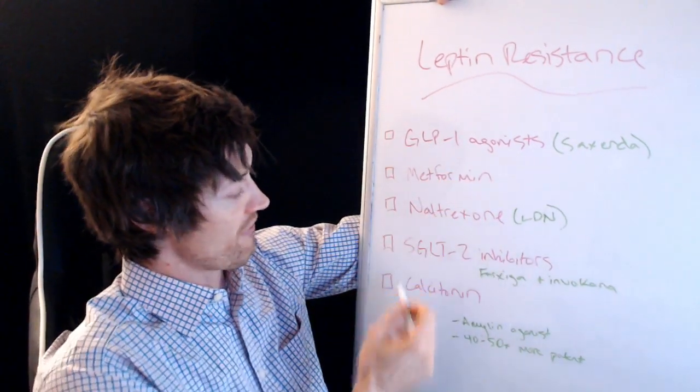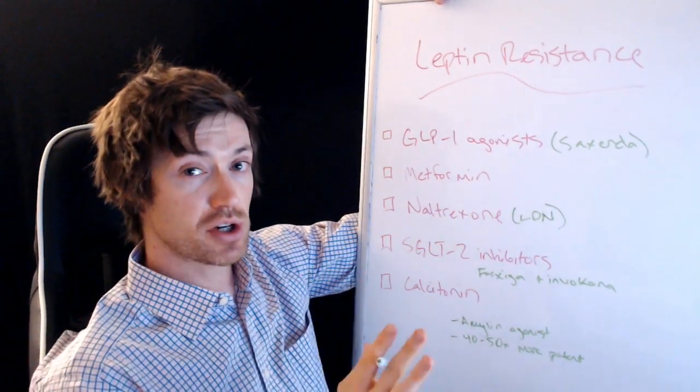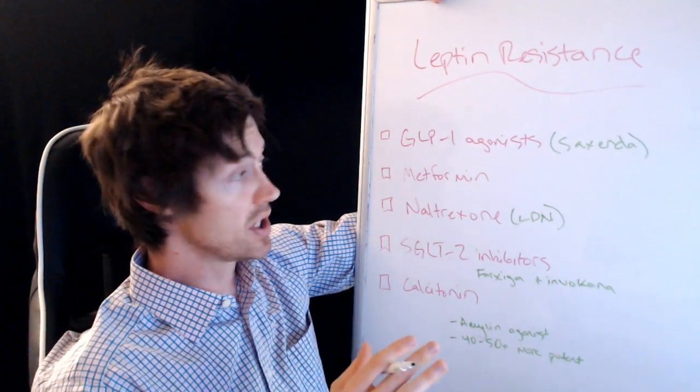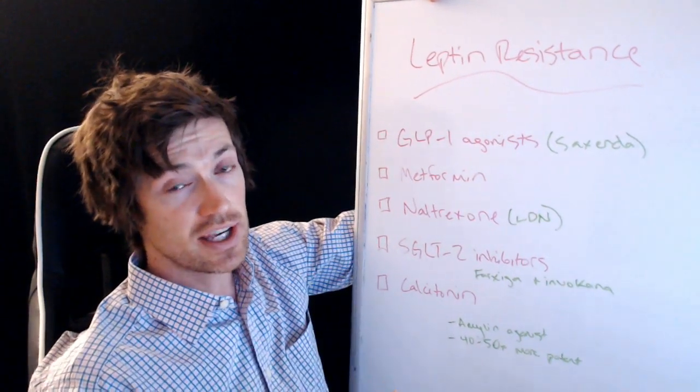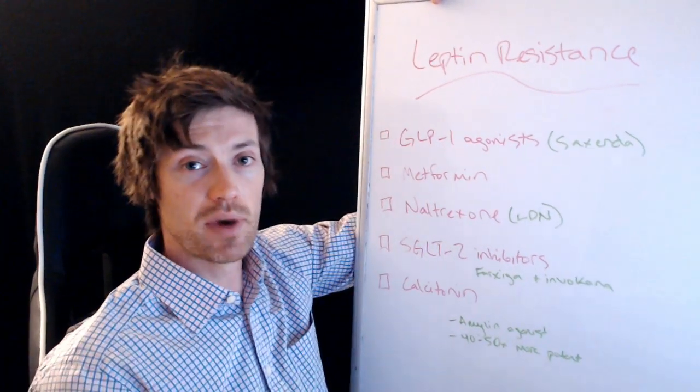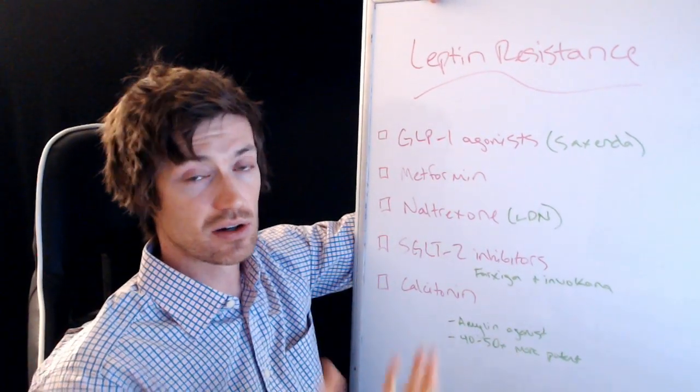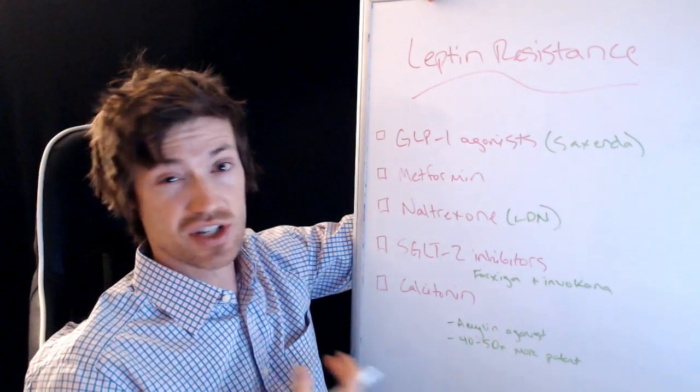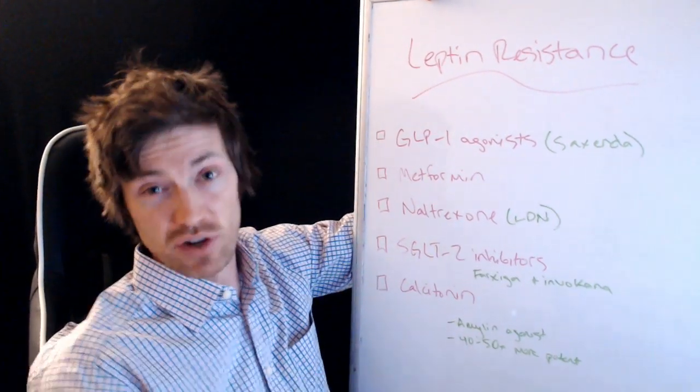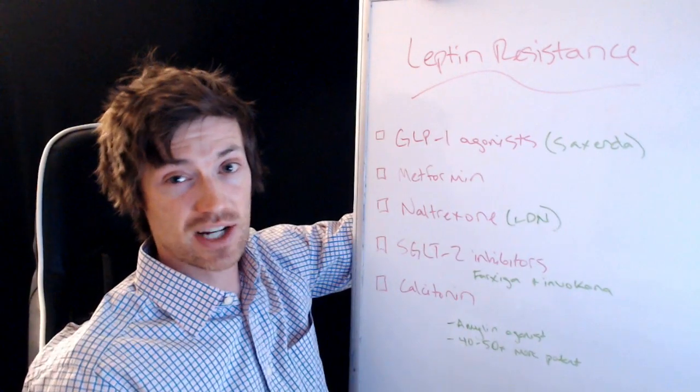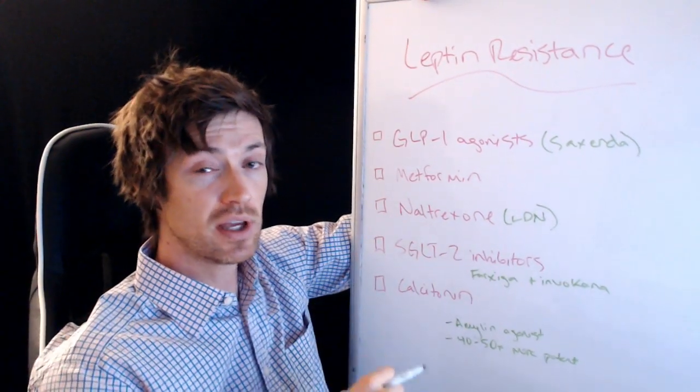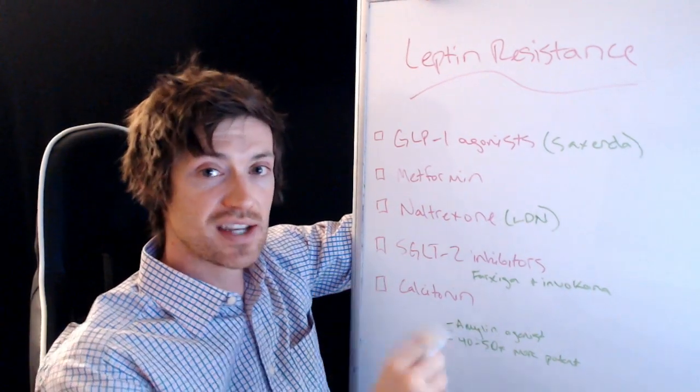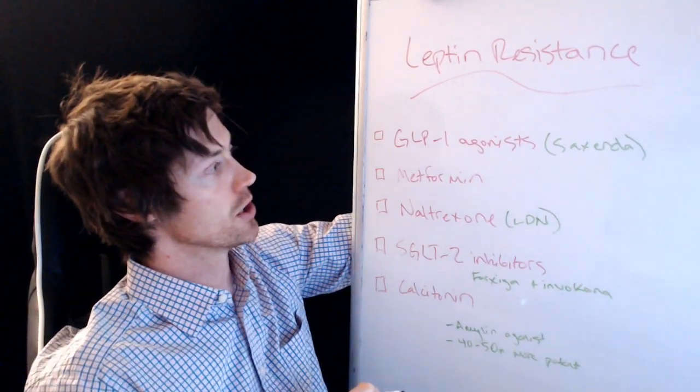Okay, so we're going to talk about five prescription medications which can be used to treat leptin resistance. And I should also tell you that most of these are used off-label. If you go to your doctor and you say, hey, what medicines do you have to treat me for leptin resistance? They'll look at you with a funny, confused look. That's because most doctors don't even know how to treat it. They don't ever test for it. So most of these are going to be used off-label, meaning they're not used for the intended purpose.